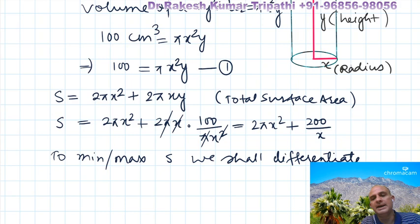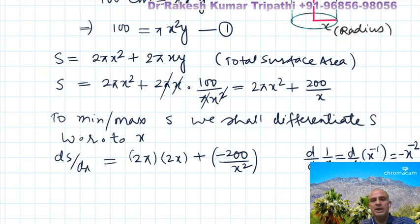To find critical points at which the surface area may be maximum or minimum, we equate dS/dx with zero. The derivative of 1/x is the same as d/dx of x^(−1), which equals −1·x^(−2), giving −1/x². So to find the critical point we set dS/dx = 0.